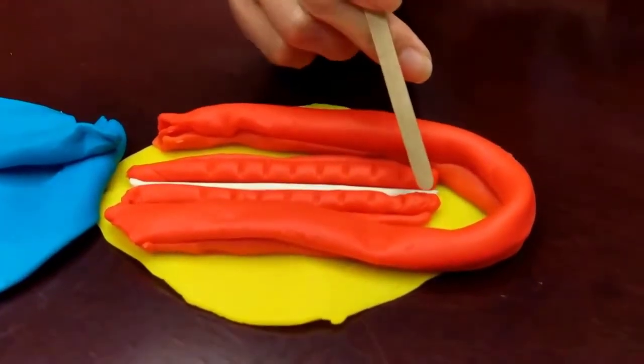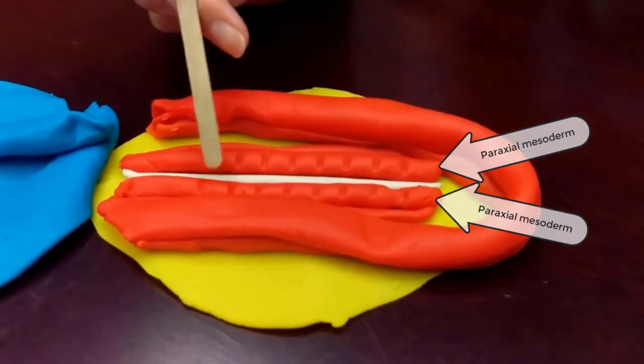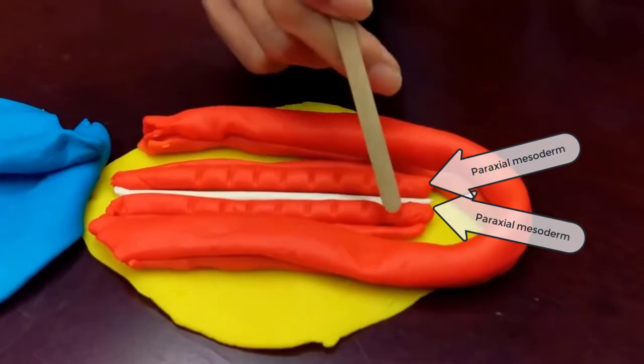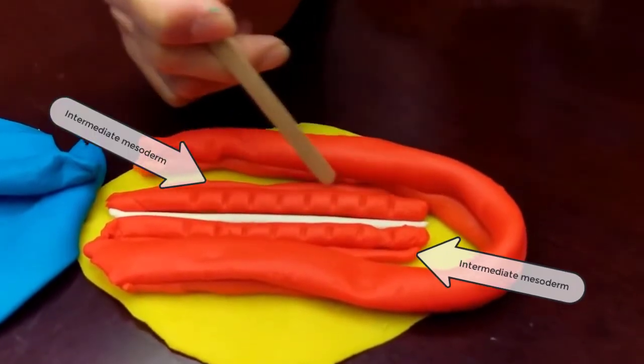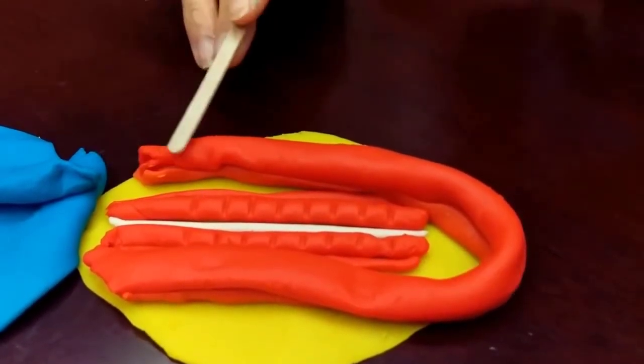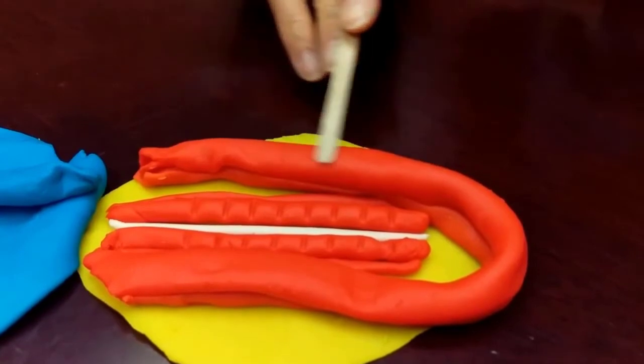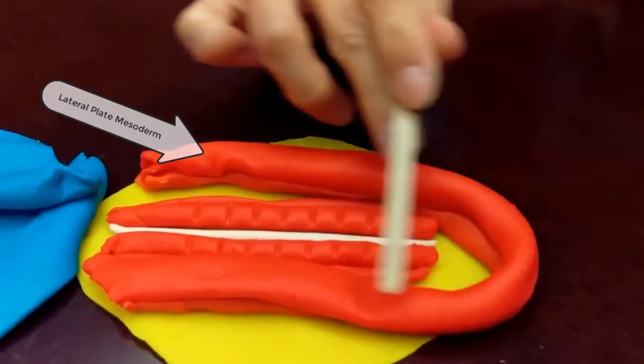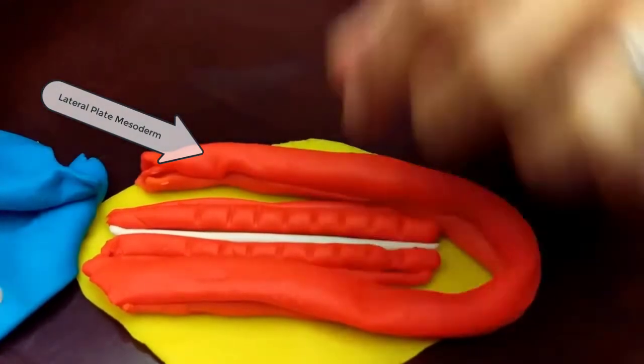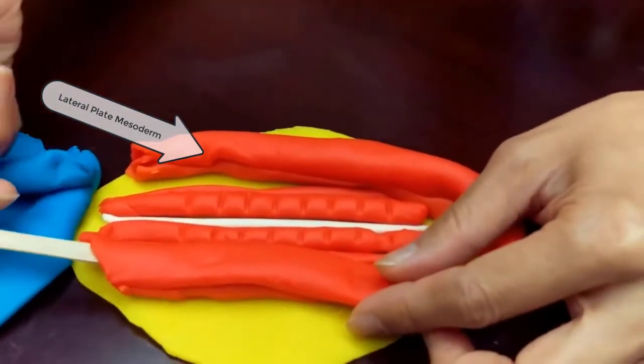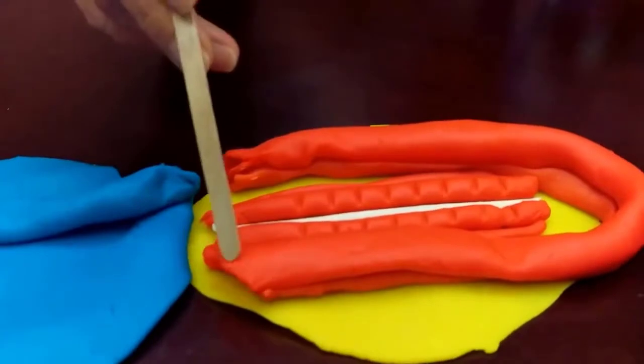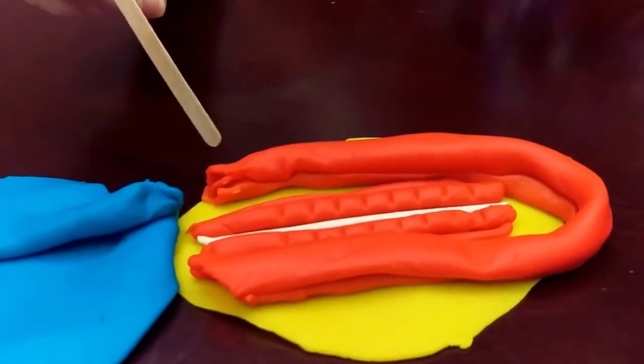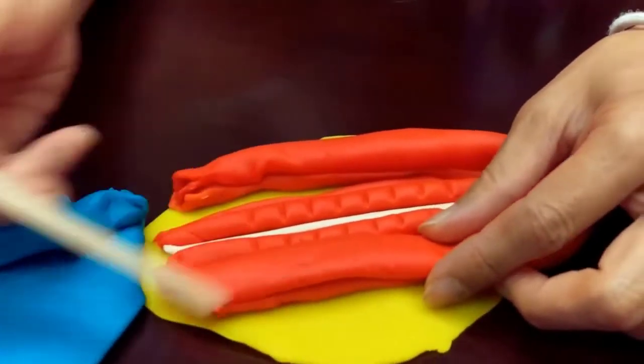On either side of the notochord, we have the paired paraxial mesoderm. Lateral to that, the intermediate mesoderm pair, and even lateral to those and going all the way around the peripheral margin of the trilaminar germ disc would be the lateral plate mesoderm. Within the lateral plate mesoderm, a tunnel-like space forms that goes all the way throughout the length or shape of the lateral plate mesoderm.